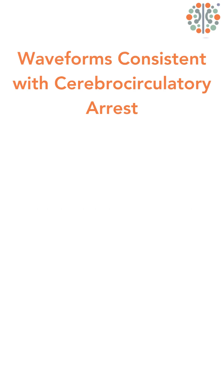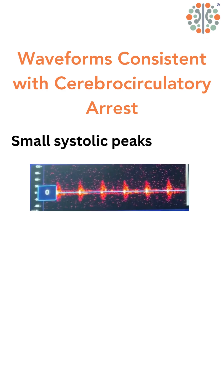The first pathognomonic pattern is small systolic peaks. These must last less than 200 ms in duration, and they must have less than 50 cm per second peak systolic velocity, without any flow in any direction during the remainder of the cardiac cycle.